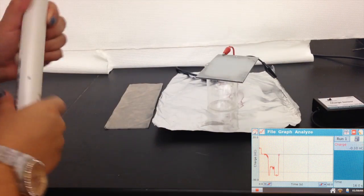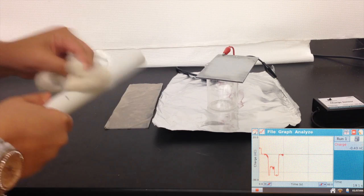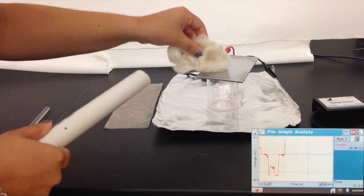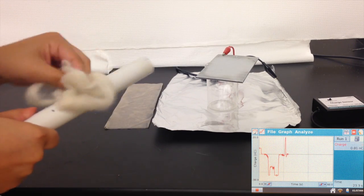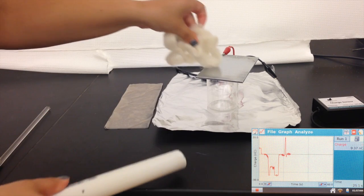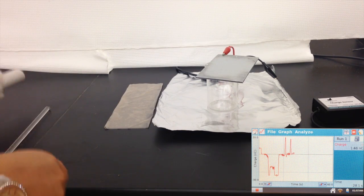We now re-zero the charge sensor and re-charge the wool and the PVC pipe. We can see that the wool was positively charged. Therefore, we can conclude that wool is higher on the triboelectric series than PVC.